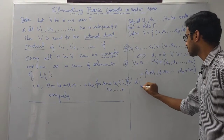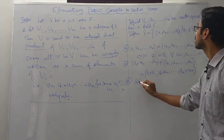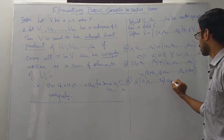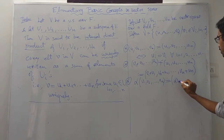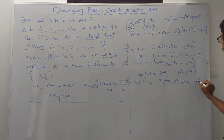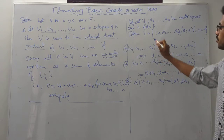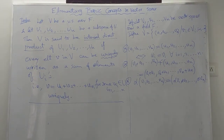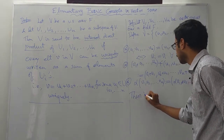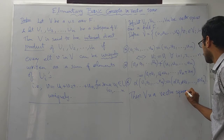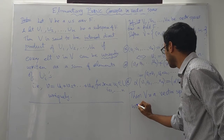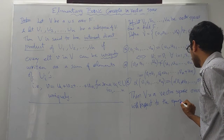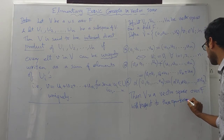Define the scalar multiplication: for every alpha in F, alpha times the element (V1, V2, ..., Vn) is defined as (alpha*V1, alpha*V2, ..., alpha*Vn). If we define addition and scalar multiplication this way, then V is a vector space over F with respect to these operations.